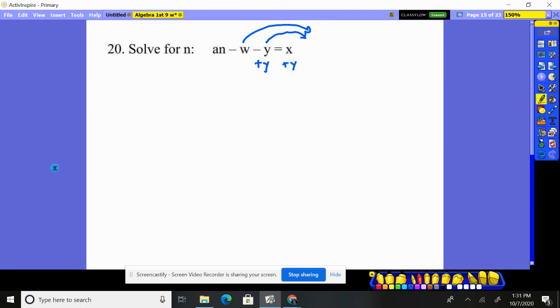So let's move the y over first. So we add y to both sides, an minus w, because that goes away, x plus y. I'm now going to move the w over. So I add w to both sides. I get a times the n equals x plus y plus the w.